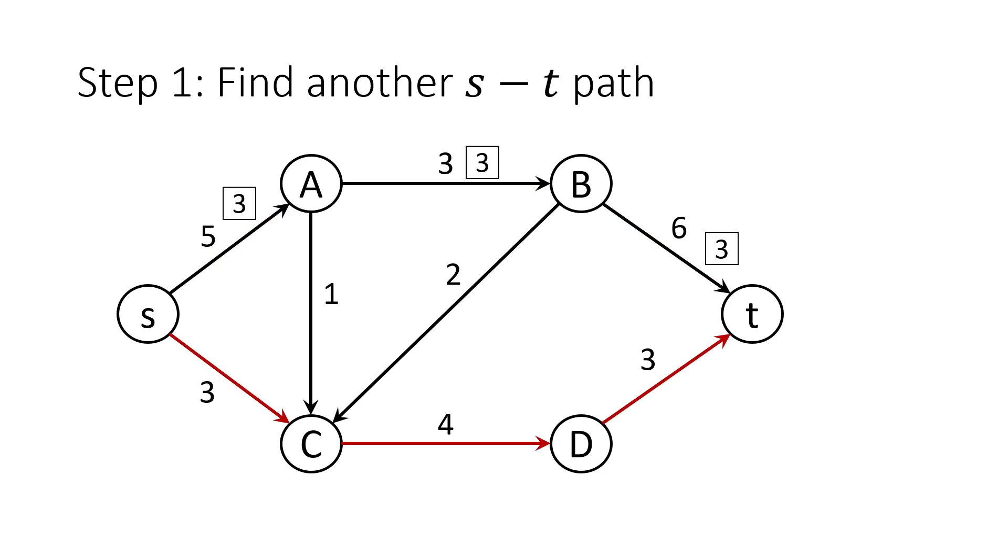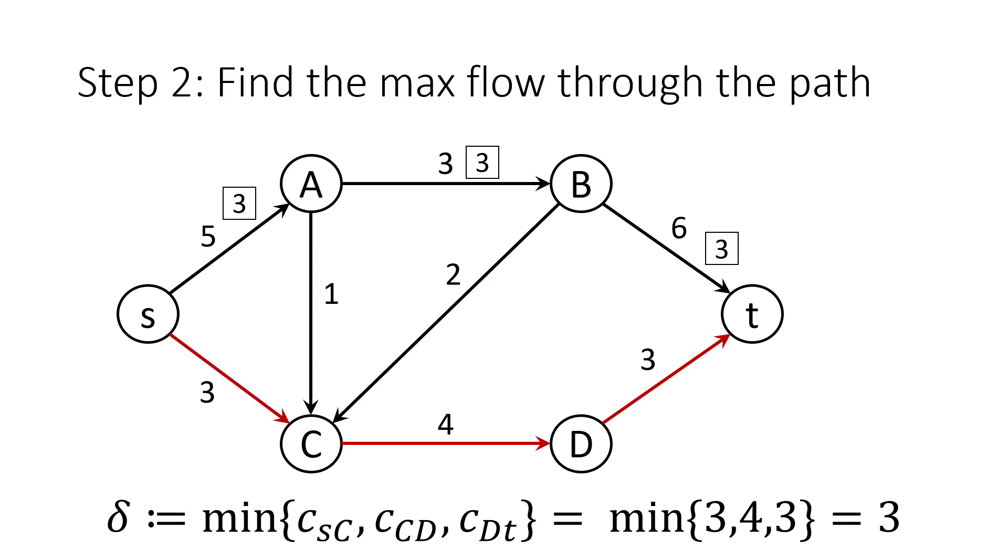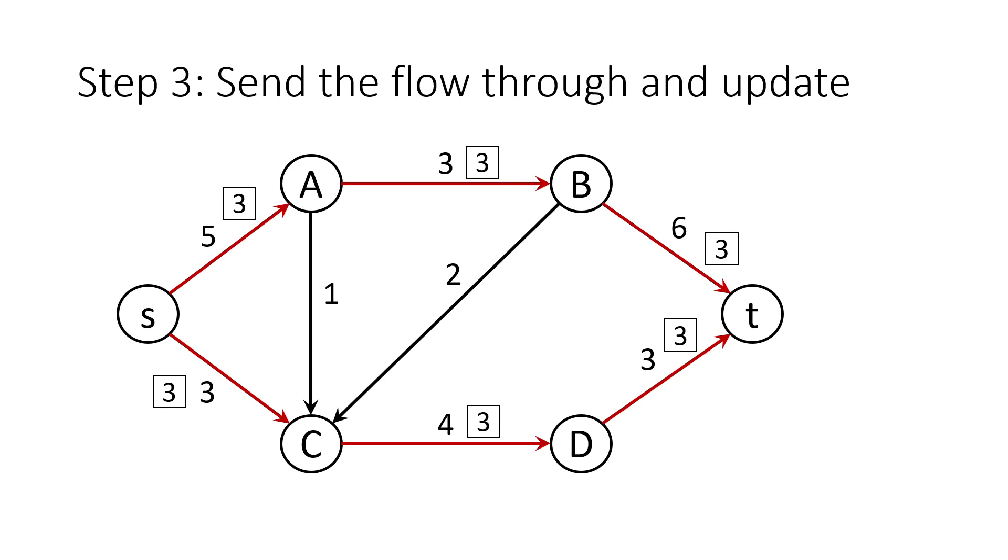Now, we come back to step 1 again, and find another ST path. This time, through the bottom of the graph instead of the top. This path's edges have a minimum capacity of 3, so the flow through the path will be 3. And so, we update our graph again.